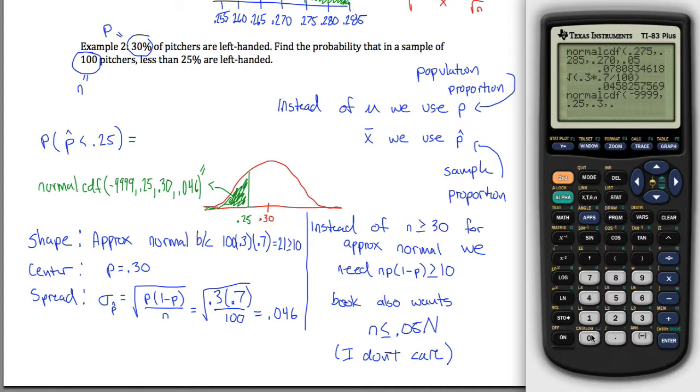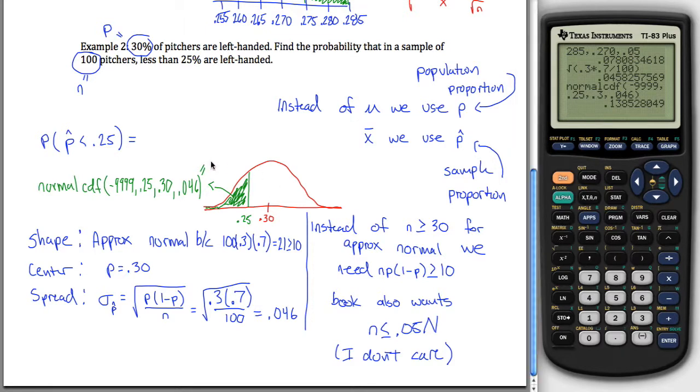And 0.046, be careful with all the decimals, is our spread. If you hit enter, it gives you 0.1385. In other words, the probability that in a sample of 100 pitchers, less than 25% of them are left-handed is 13.85%.